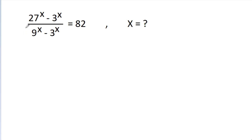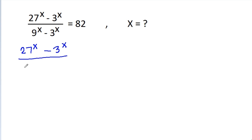In this video, we have given that (27^x - 3^x) / (9^x - 3^x) is equal to 82. Then we have to find the value of x.